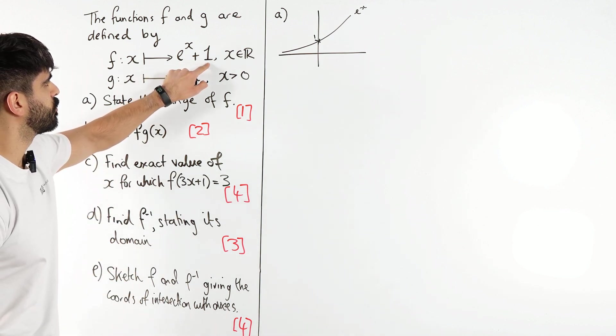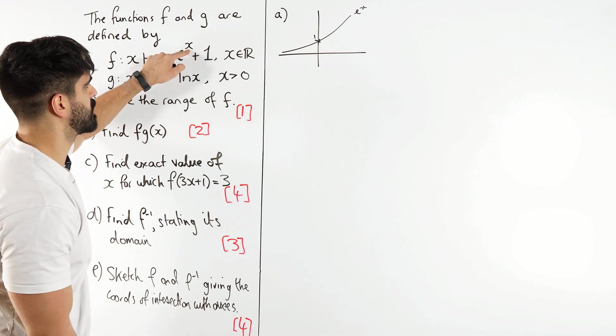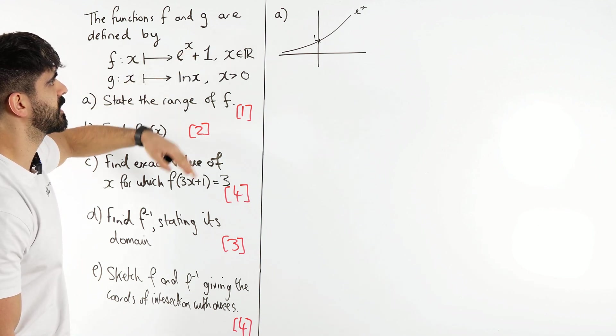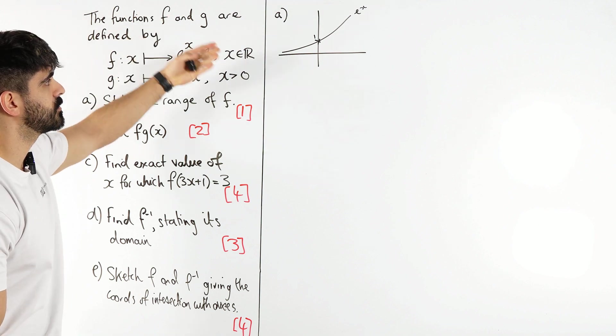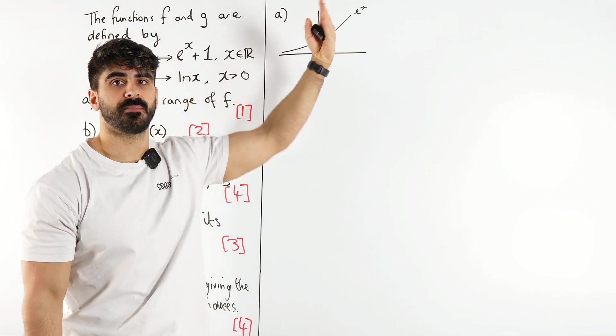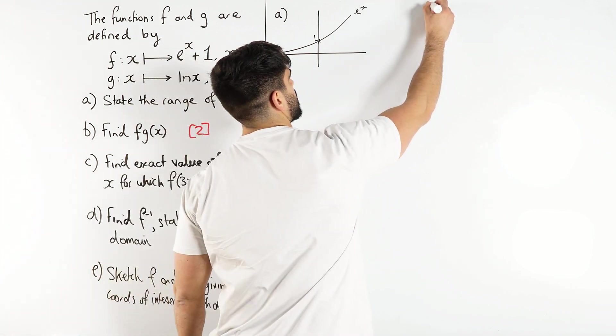e^x + 1, that plus 1 is affecting the y values. It has nothing to do with the x because it's not within the power, right? So that plus 1 is going to add 1 to all of the y values, meaning it's going to move up by 1.